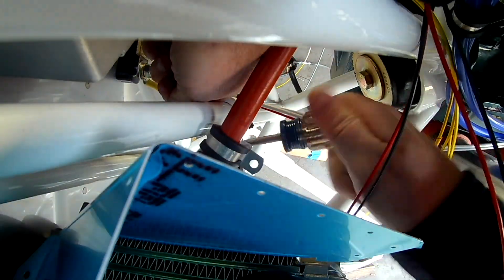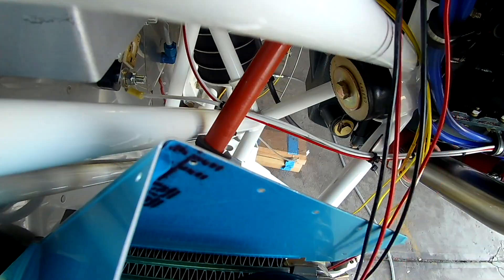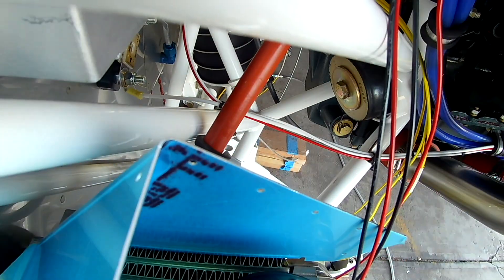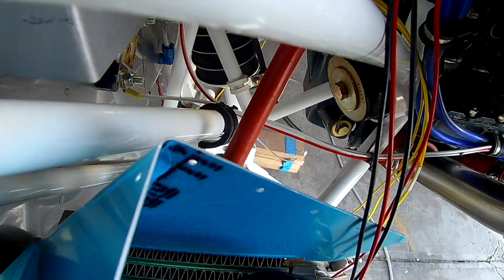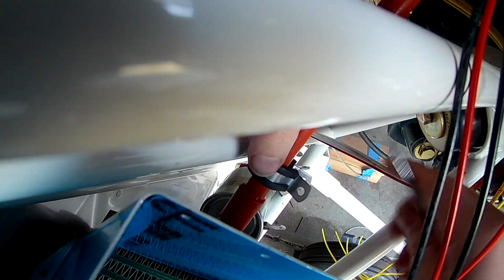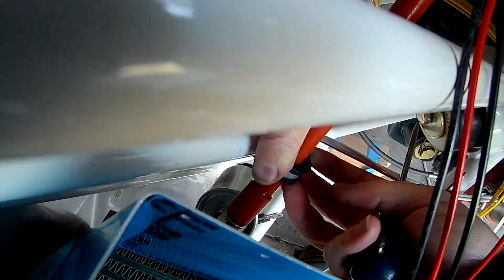Now we're working on the final placement of the fuel filter. If you look in the upper left center, you'll see the blue AN fitting sticking out of the firewall with a crimped piece of line to make sure it's airtight. That's where the fuel line will come out and go towards this fuel filter.